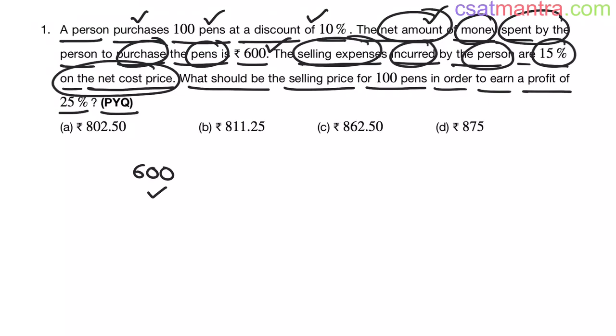Now, the selling expenses incurred by the person are 15% on the net cost price. See, he bought the pens at 600 rupees. Now, to sell them, he has to travel. Other expenses would be there. Those expenses incurred are 15% on the net cost price. 600 is the net cost price.